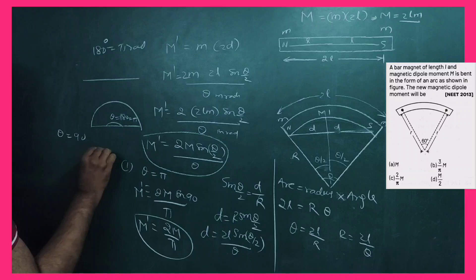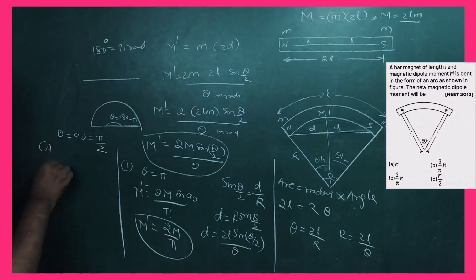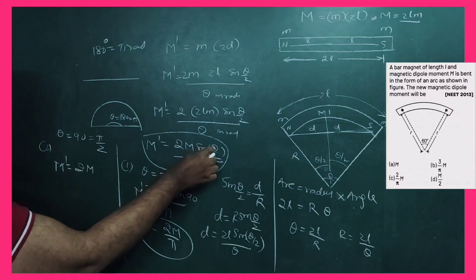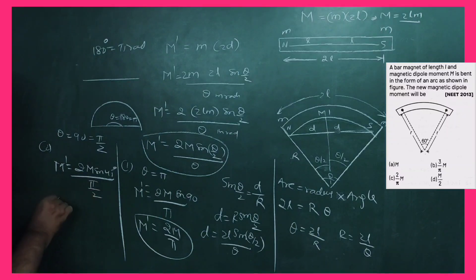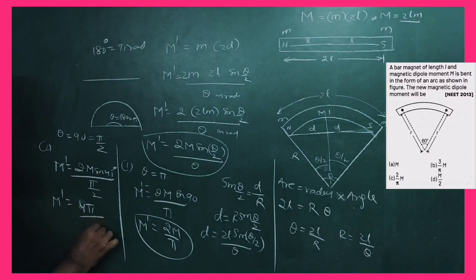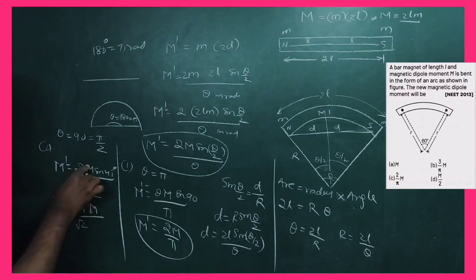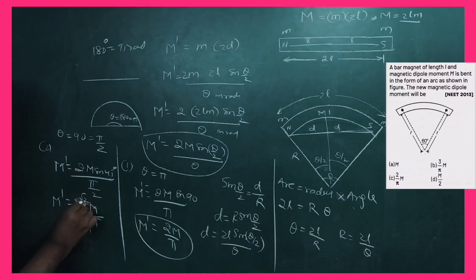Example 2: if θ = 90°, in radians that is π/2. Then M' = 2M · sin(90°/2) / (π/2) = 2M · sin(45°) / (π/2). Since sin(45°) = 1/√2, we get M' = 2M · (1/√2) × (2/π) = 4M / (√2 · π) = 2√2 M / π. So for θ = 90°, the new magnetic moment is 2√2 M / π.